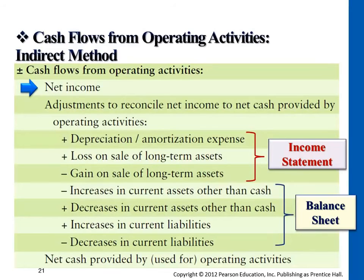Current liabilities is more straightforward. If we have a decrease in current liabilities — think about accounts payable — last year's balance was $5,000, this year it's $1,000. You have a decrease in accounts payable of $4,000, which basically means you paid off the cash. So any decrease in current liabilities, using the example of accounts payable, we subtract the cash flow amount because that's the amount we actually paid off to clear the liability.